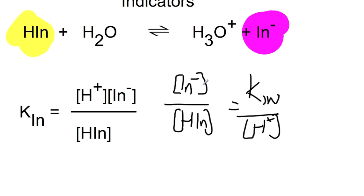At the point at which the color will change, so at the point where we have a 50-50 mix, this will equal 1 and therefore the pKIN will equal the pH.